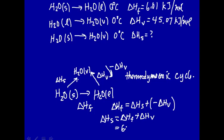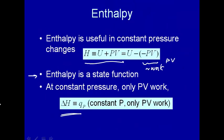Delta H of fusion is 6.01 plus delta H of vaporization, 45.07, gives us 51.08 kilojoule per mole. That's the thermodynamic cycle — because enthalpy is a state function, we can calculate one leg of the triangle if we know the other two. So that's it for enthalpy. We've learned that starting from our definition and using differential calculus, we can derive that the enthalpy change equals the heat transferred to or from the system in a constant pressure process. Then we did a couple of examples.